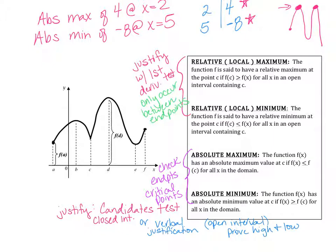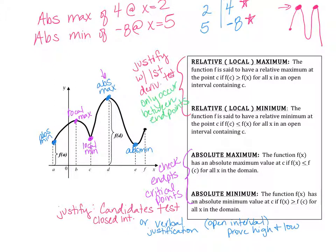Just to make sure you understand the difference: if you look at this graph, this guy would be an absolute max. It looks like I have two points at about the same height — those would both be absolute mins. But I do have some locals. That's a local min. We have a relative or local max here. And people always ask, would this one also be considered a local max? Yes. Could you prove the first derivative is changing positive to negative? Yes. So that is also a local.